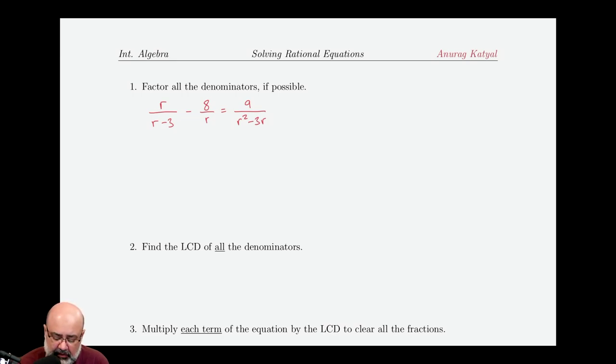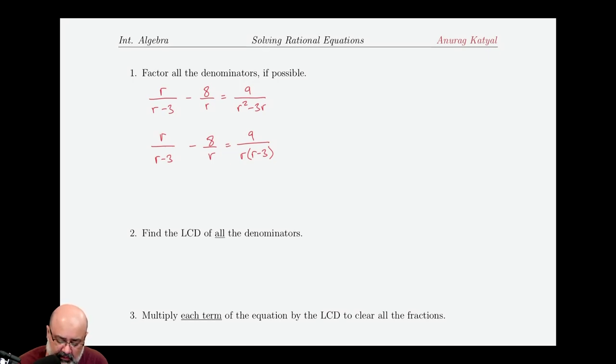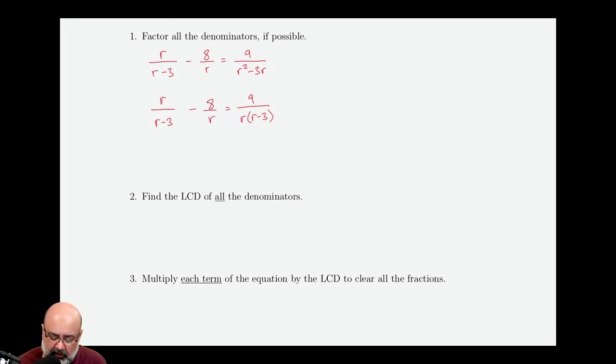So r minus three cannot be factored, neither can r. We need to factor r squared minus three r. So again, we think of GCF first for any factoring questions, and the GCF is r. So we can write this equation as r over r minus three minus eight over r equals nine over r times r minus three. So we factored all the denominators, the ones at least that were possible.